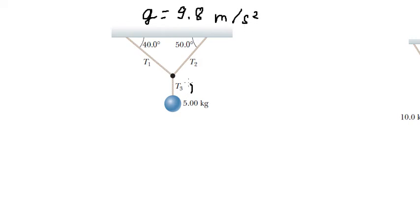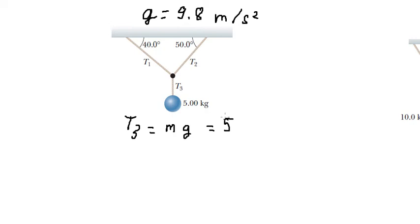For T3, that is simple. We just put T3 equal to m multiplied by g. We have 5 kilograms multiplied by 9.8, and we get 49 newtons.